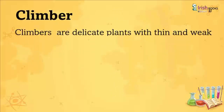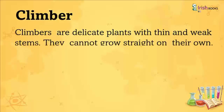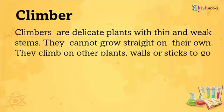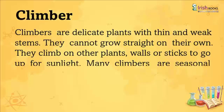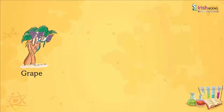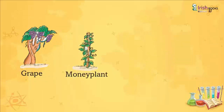Climbers: Climbers are delicate plants with thin and weak stems. They cannot grow straight on their own. They climb on other plants, walls or sticks to go up for sunlight. Many climbers are seasonal whereas some live for a few years. Examples include grapevine, money plant and bitter gourd.